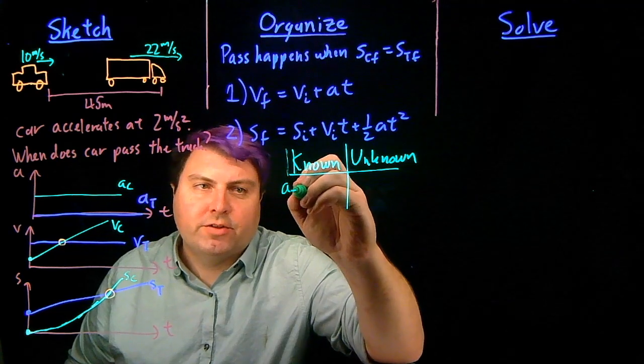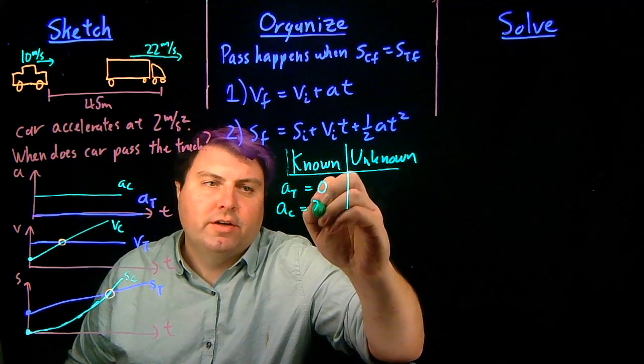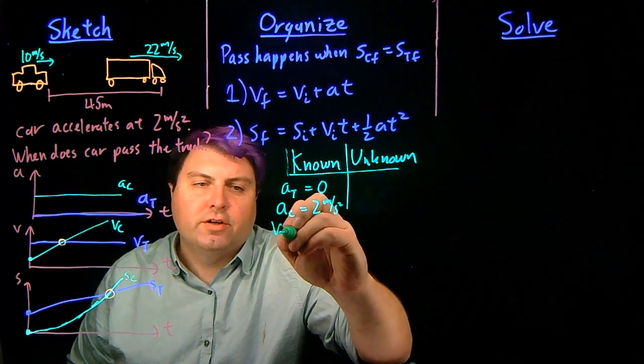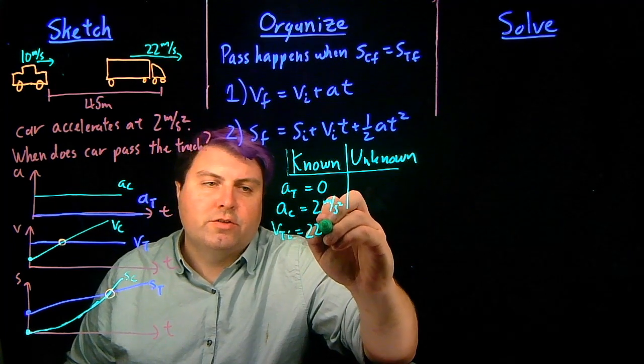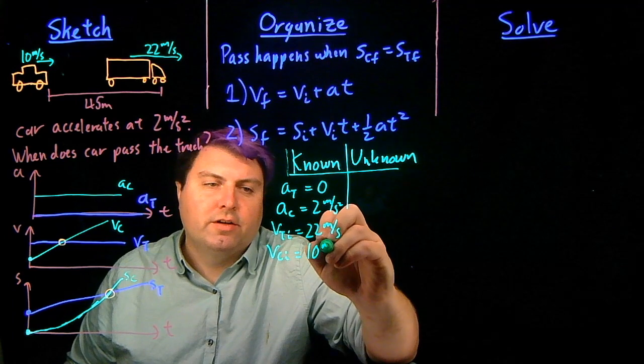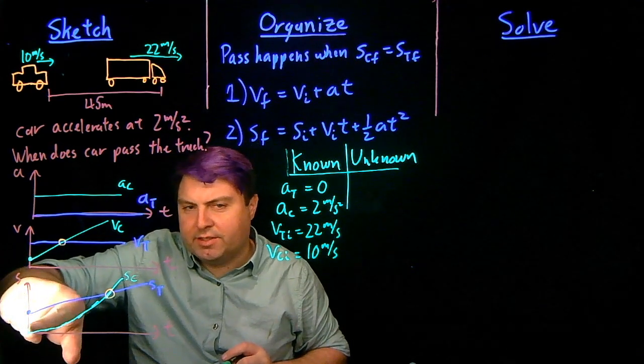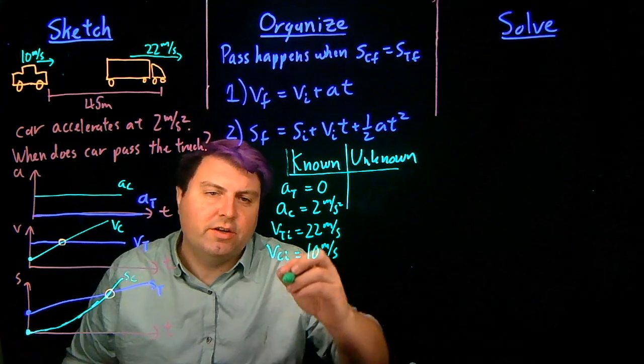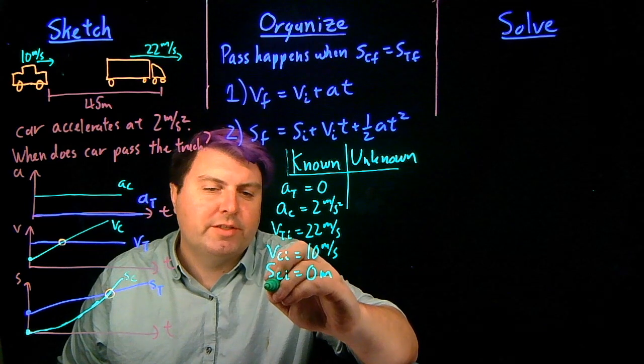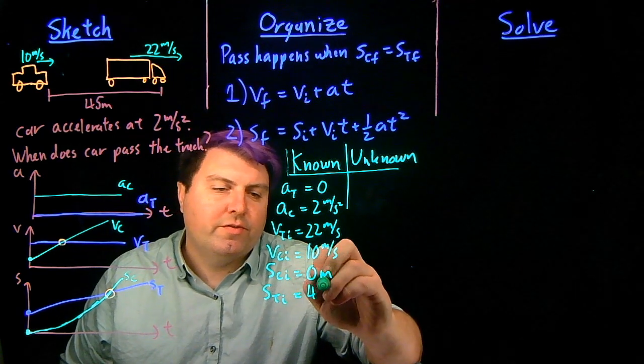We know the acceleration of the car is 2 meters per second squared. We know the initial velocity of the truck is 22 meters per second. We know the initial velocity of the car is 10 meters per second. And then it's oftentimes easiest to say that one of these two positions is zero. So we can say the position of the car initial is zero meters. And we can say the position of the truck initial is 45 meters.